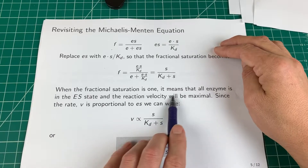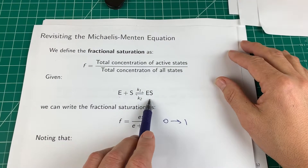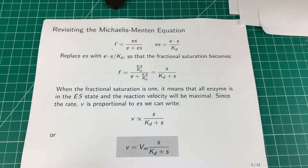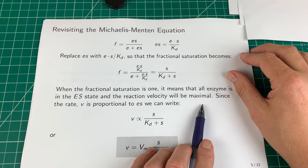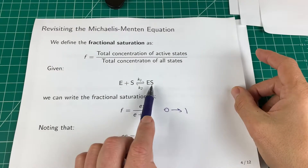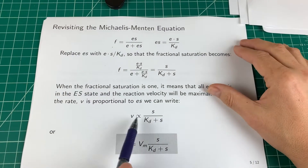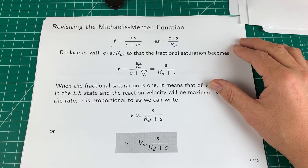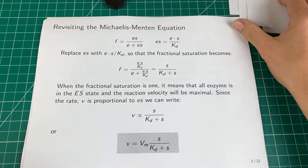When the fractional saturation is one, it means that all the enzyme is in the enzyme-substrate complex state. We know that it's the enzyme-substrate complex that leads to product, so if we've got the maximum amount of enzyme-substrate complex, we must be producing the maximum amount of product. So we can say that if all the enzyme is in the enzyme-substrate state, the reaction velocity will be maximal. The rate of product formation is proportional to the enzyme-substrate complex, so it must also be proportional to the fractional saturation. To get rid of the proportionality I need to multiply by a scaling factor — the maximal rate. So this expression is the Michaelis-Menten expression in terms of the maximal velocity and the dissociation constant, and you've seen this before.